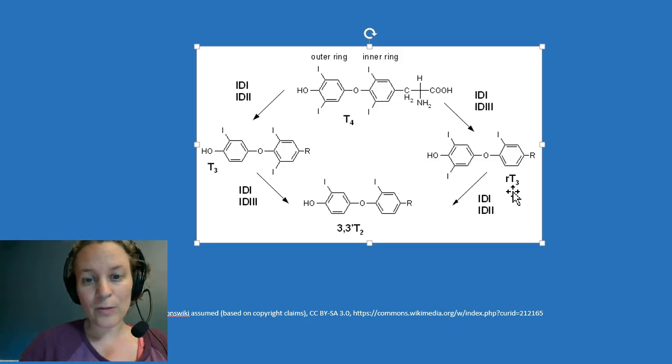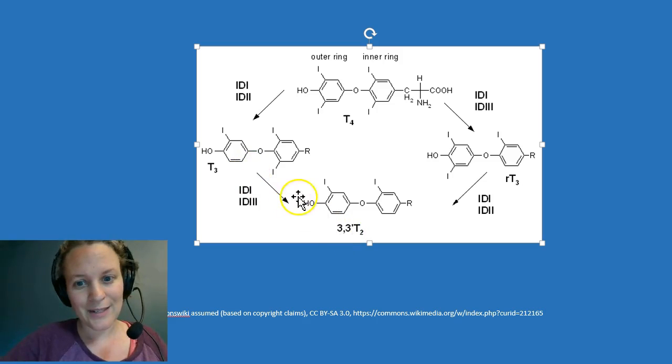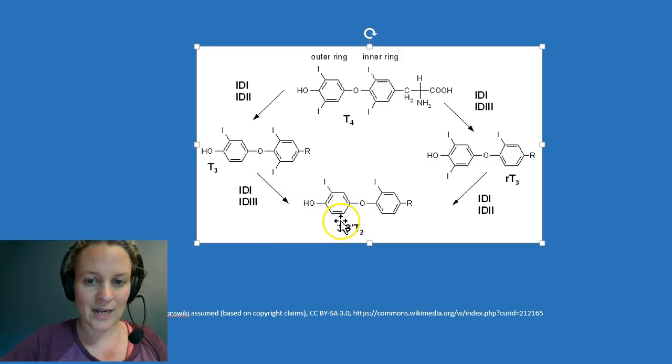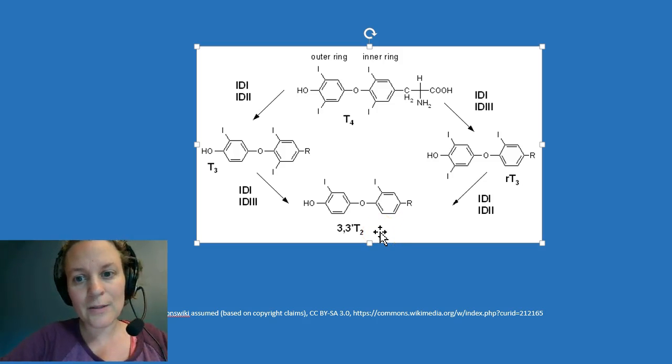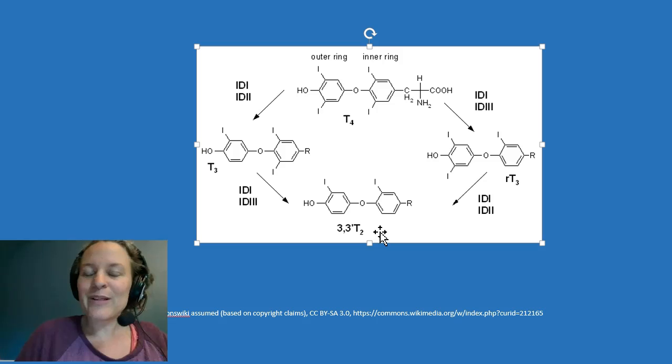So the cell itself, depending on which deiodinase it expresses, can basically choose to a certain degree what type of thyroid hormone stimulation it might need at that particular point. So very interesting. Then you can continue to deiodinase by taking off even more iodines, which will inactivate. So right here you can see another—if you pluck off another iodine, then you've got T2, which is not active. And over here you can do the same thing with reverse T3. And then those will just get metabolized and excreted.